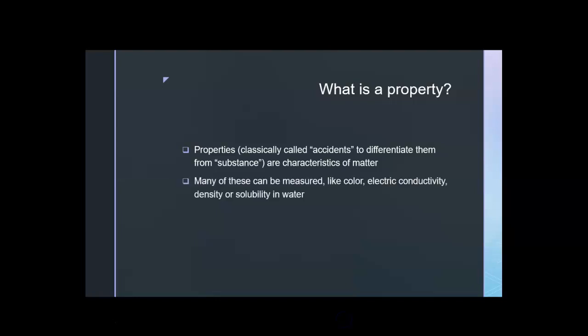What is a property? Properties, which classically were called accidents, differentiating them from substances, are characteristics of matter. Many of these can be measured, like color, absorbance of light, electric conductivity, density of the substance, or solubility in water.